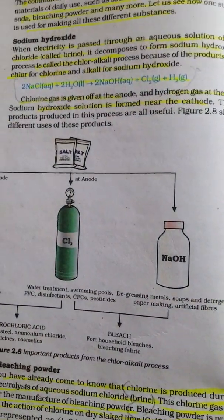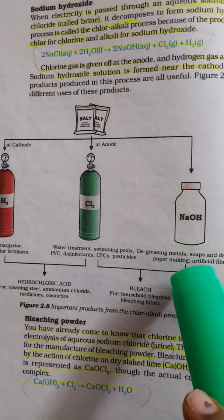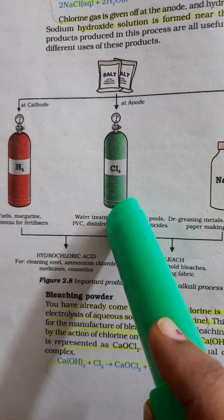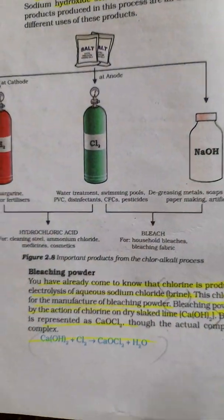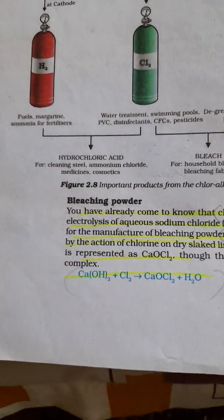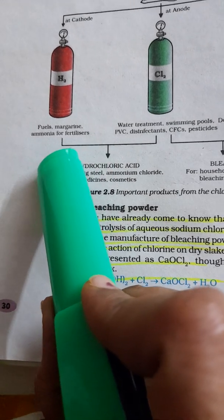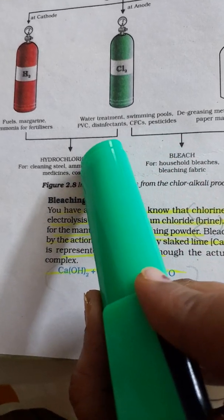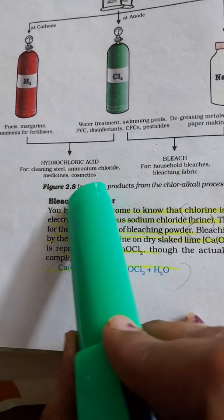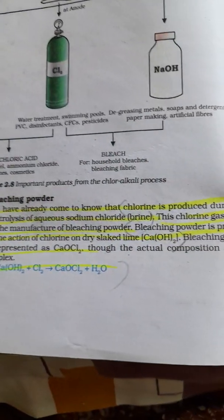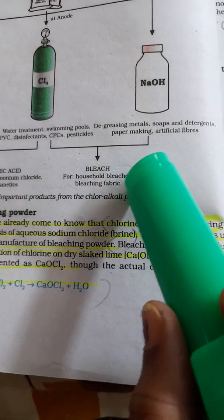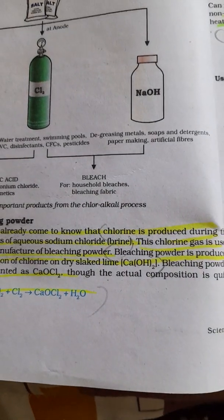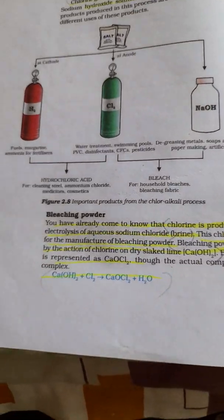All the products from the reaction are very useful. In the figure you can see the different uses. At the anode: chlorine; at the cathode: hydrogen and NaOH. Hydrogen is used as fuel, for margarine, and for ammonia in fertilizers. Chlorine is used for water treatment, swimming pools, disinfectants, PVC, and hydrochloric acid for cleaning steel, ammonium chloride, medicines, and cosmetics. NaOH is used for degreasing metals, soaps, detergents, papermaking, artificial fibers, and household bleaches.